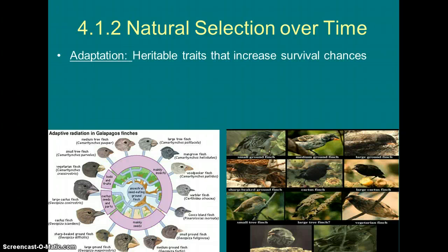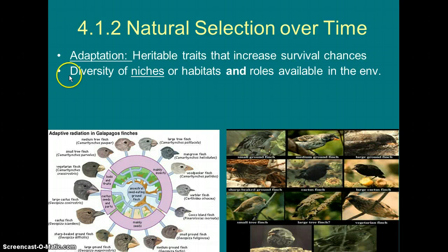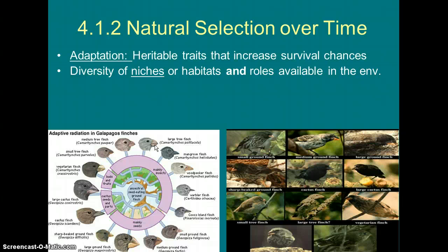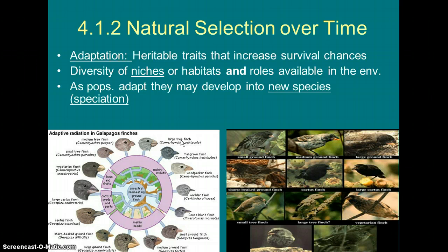Over time, those traits become what we call adaptations — making an organism more successful in a particular environment, or niche. A well-known case study is Darwin's finches in the Galapagos. These finches lived in different habitats, and their beak shapes changed over time due to environmental pressures and differences in food availability. Birds that randomly had the right beaks survived better when they could access the food available on different islands. Because certain birds survived better than others, those adaptations eventually formed totally new species — a process called speciation.